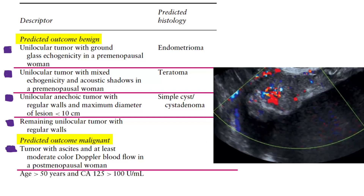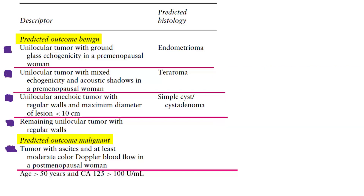A tumor with ascites and at least moderate color Doppler flow in a postmenopausal woman is suggestive of a malignant tumor. Another feature of malignancy is age more than 50 years and CA-125 more than 100 units per ml.